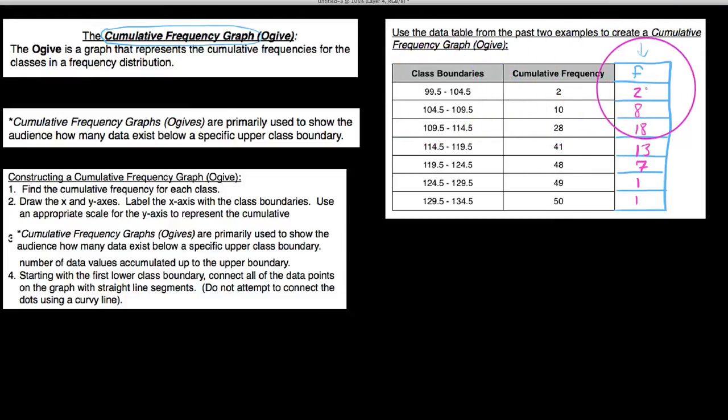For example, in the first class it has a frequency of 2, so up until now we've got a cumulative frequency of 2. But in our second class we had 8 states that had between 104.5 and 109.5 high temperature, but up until now we had the 8 states here plus the initial 2, so we've had 10. So basically what I'm saying in this little bullet point here is an ogive or cumulative frequency graph is really good at helping us see how many states had high temperatures.